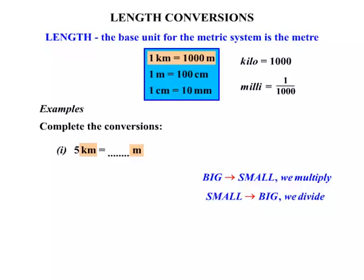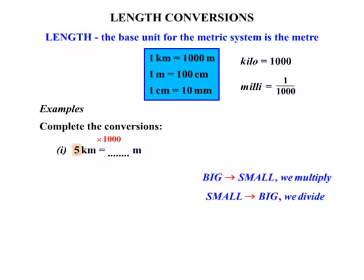We know that one kilometre is a thousand metres, so from kilometres to metres that's from big to small, which means we're going to multiply. We multiply by a thousand, and five times a thousand is five thousand. So five kilometres equals five thousand metres.